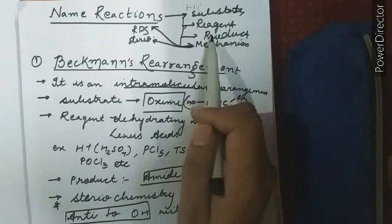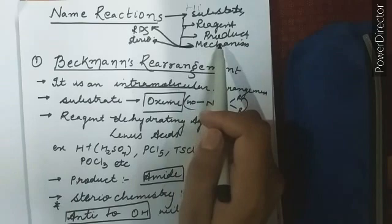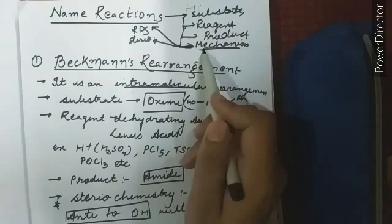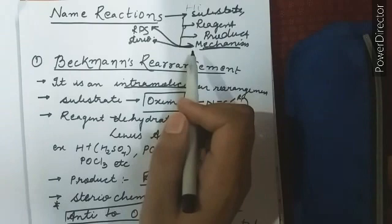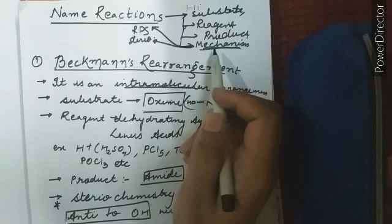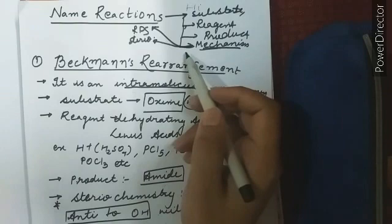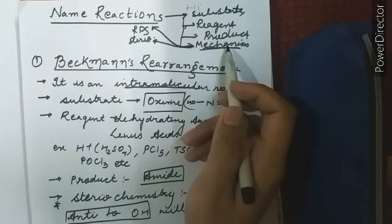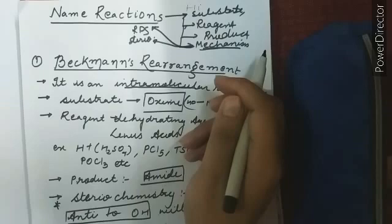As you all know substrate is the molecule on which the reaction will occur. Reagent are the chemicals that we will add for the reaction to initiate and the product are the final molecules that are formed. The very important thing is the mechanism. The mechanism of any organic reaction is very important because with the help of mechanism only you can know the RDS, the stereochemistry and other important things. For name reactions it is very important that we must identify the reaction. But for complex questions which involve different kinds of functional groups we must know the mechanism how it works.